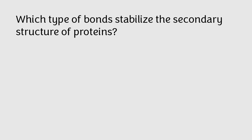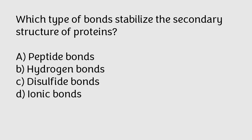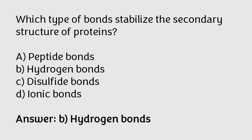Which type of bond stabilizes the secondary structure of proteins? Peptide bond, hydrogen bond, disulfide bond, ionic bond. The correct answer is option B. Hydrogen bond is the type of bond which stabilizes the secondary structure of proteins.